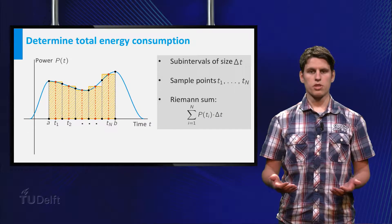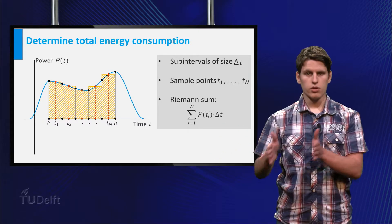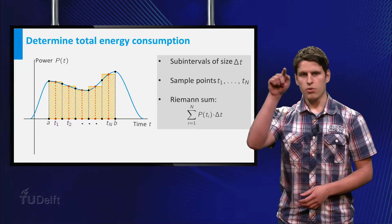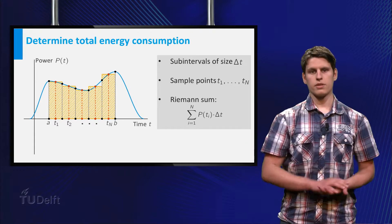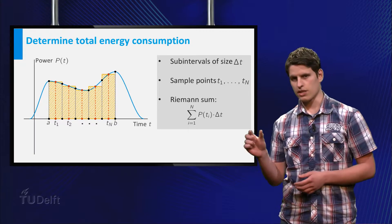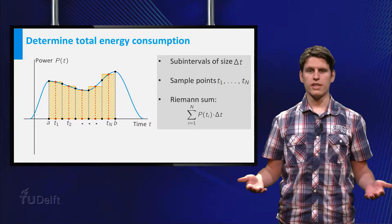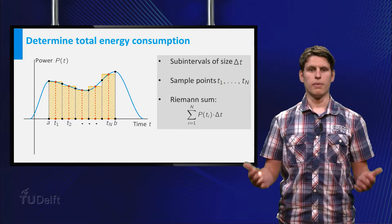In order to determine the total energy consumption, we divide the entire interval into smaller intervals and pick a sample in each interval. We can then approximate the total energy by summing the delta t times the power at each sample point. The approximation sum is called a Riemann sum.